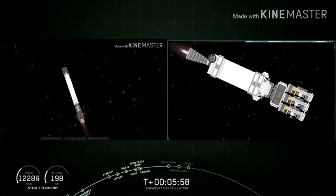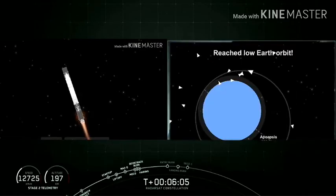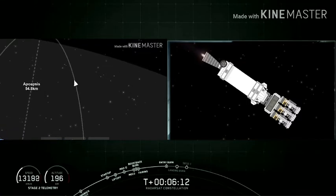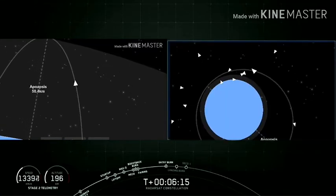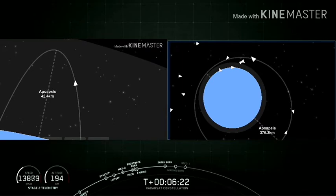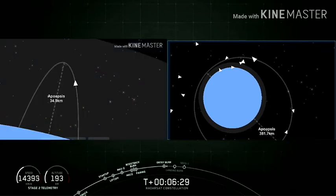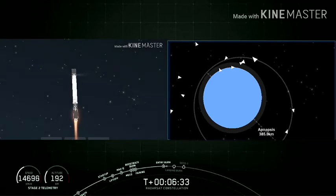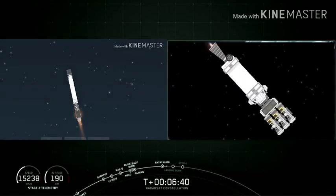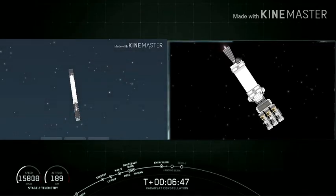We are 10 seconds till entry burn. Stage one entry burn has started. Confirmation that stage one entry burn has started. So there on the left-hand side of your screen you see the first stage as it's making its way back to landing zone one at Vandenberg Air Force Base with the help of the grid fins as it steers. The view on your right is the same operation that we have going on just from a different camera. So there you can see that we have confirmation of stage one entry burn shutdown. Stage two on the right-hand side there looking good. Everything is nominal and trajectory is good.